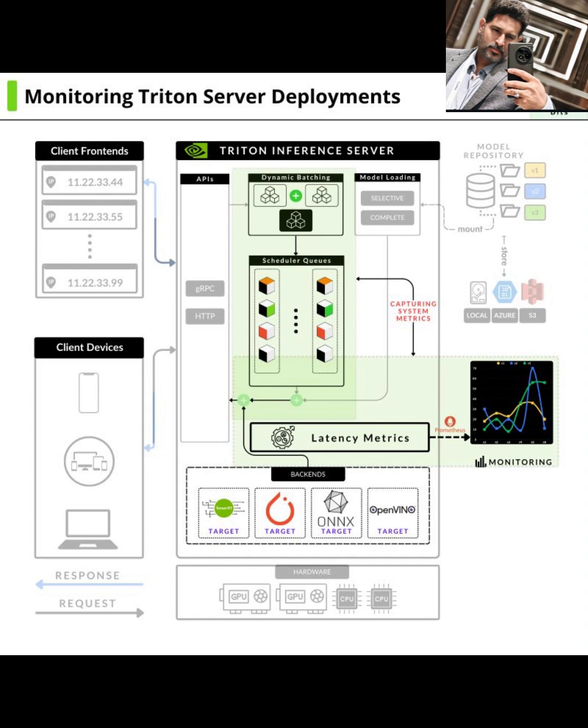Now, how do we monitor all this activity? Triton is great because it allows us to capture system metrics. This includes things like GPU utilization, CPU usage, memory consumption, and the health of the server itself. These metrics are crucial for understanding the overall performance and resource usage of your Triton deployment. This data is then fed into our monitoring system.